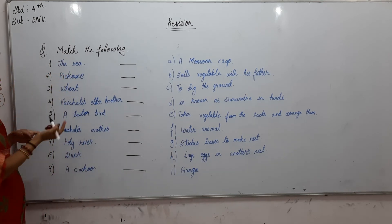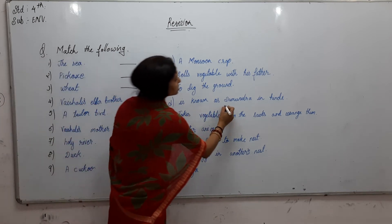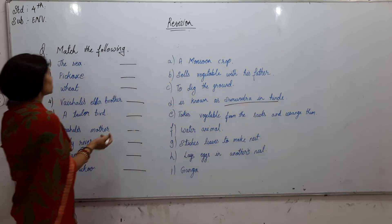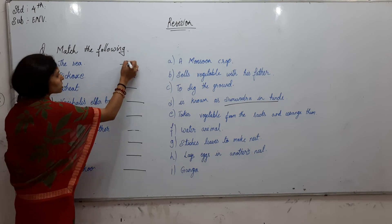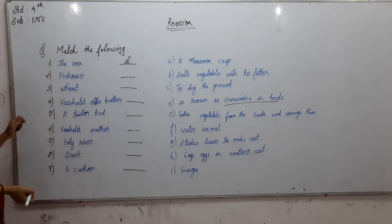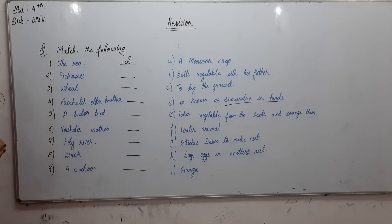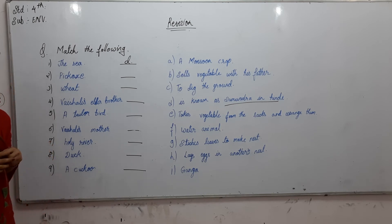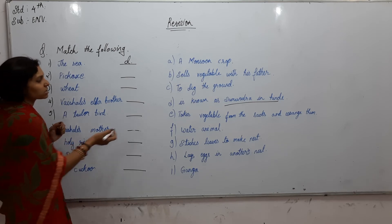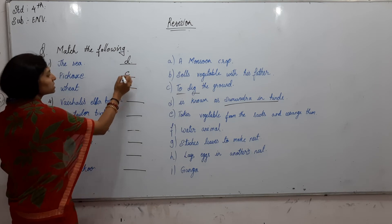The Sea — we just saw that the sea is known as Samundra in Hindi, so the answer is Option D. Next, the Pickaxe — we read in Raju's Farm that his father uses a pickaxe to dig the ground, so the answer is Option C.